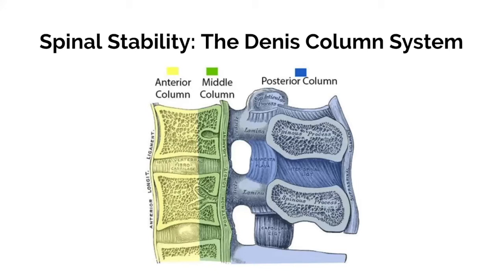There's a system made back in the 80s by Francis Denis — the three-column model — created to discuss spinal stability based on biomechanical studies related to instability following traumatic injury. Initially developed for the thoracic and lumbar spine, it can be applied to the lower cervical spine, C3 to C7, due to similar anatomy. It splits the spinal column into anterior, middle, and posterior columns. The anterior column contains the anterior longitudinal ligament and the anterior two-thirds of the vertebral body and disc. The middle column contains the posterior third of the body and disc and the posterior longitudinal ligament. The posterior column contains facet joints, ligaments, and posterior elements like the interspinous ligaments. Instability occurs when two contiguous columns are affected.